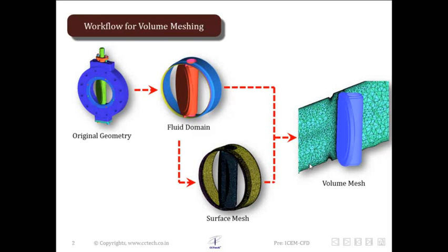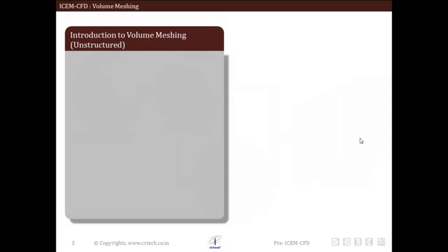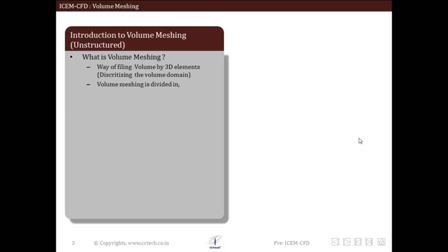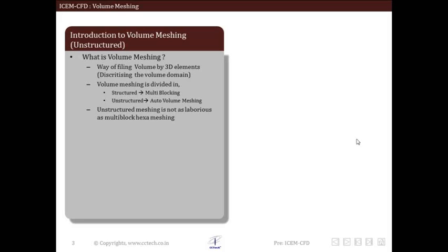Creating a surface mesh before the volume mesh gives better control over distribution and is always used when the geometry is complex. Volume meshing is a way of filling volumes with 3D elements — we call this procedure discretizing the volume domain. Volume meshing can be further divided into structured multi-block mesh and unstructured auto volume mesh. Unstructured mesh is not as tedious as a multi-block hex mesh, where fitting structured mesh across the entire volume requires much larger effort.